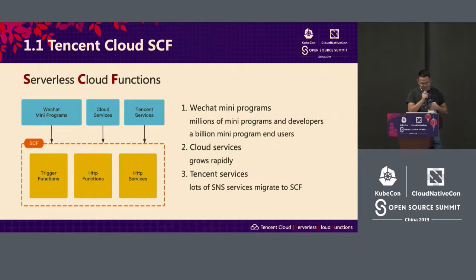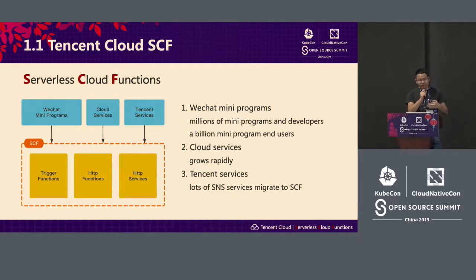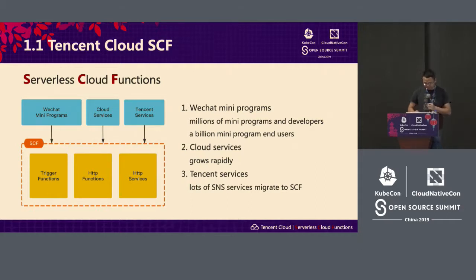If you look at the Tencent Cloud function platform, we have three invocation methods. One is the event invoker — it uses a trigger. Two is an HTTP access or call, which is a simple way: create a function and generate a URL. Three is support for web application architecture, a typical operation way that supports businesses to run on the cloud.